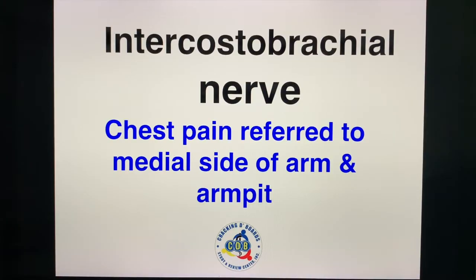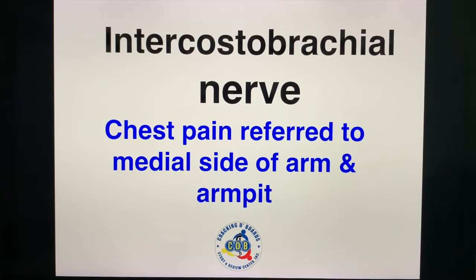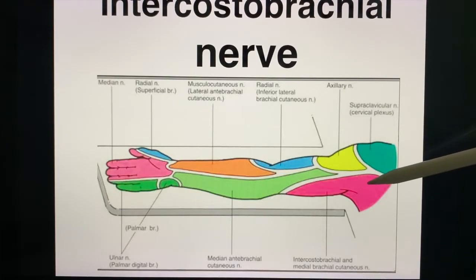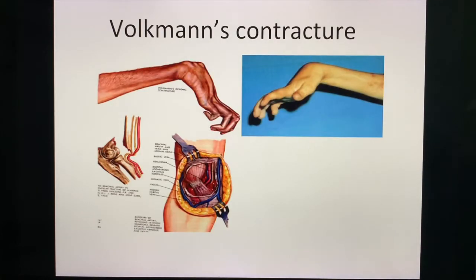Another crystal ball prediction: which nerve explains why chest pain is referred to the medial side of the arm and the armpit? This is the intercostal brachial nerve. When someone is having a heart attack (myocardial infarction), the dermatome of the heart is T1 up to T4. The intercostal brachial nerve is T2, which explains the referred pain radiating to the medial side of the arm and the armpit — the distribution shaded in pink.